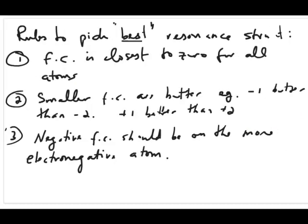What are these rules to pick the best resonance structure? I listed them here, and they're also on your lecture slide. The first rule is to make sure that the best resonance structure always has formal charges of each atom being close to zero. You really want zero if possible, but a lot of times you can't make them go to zero. So you want the smaller formal charges on the atoms.